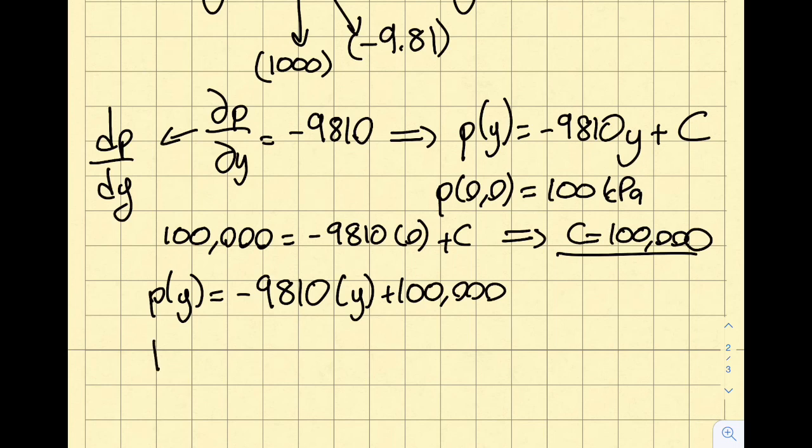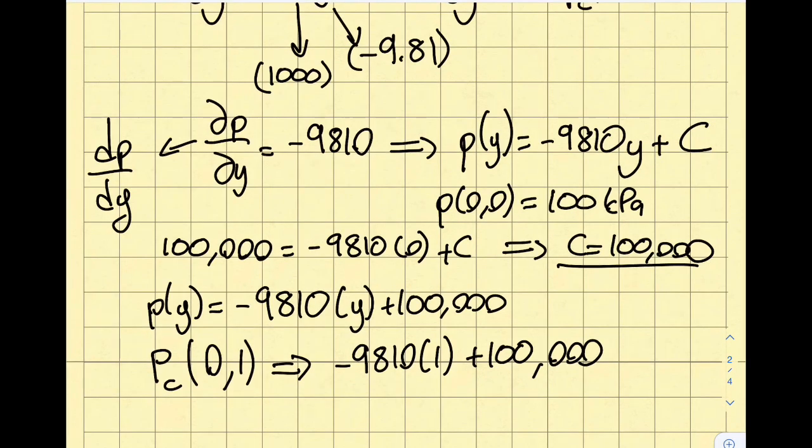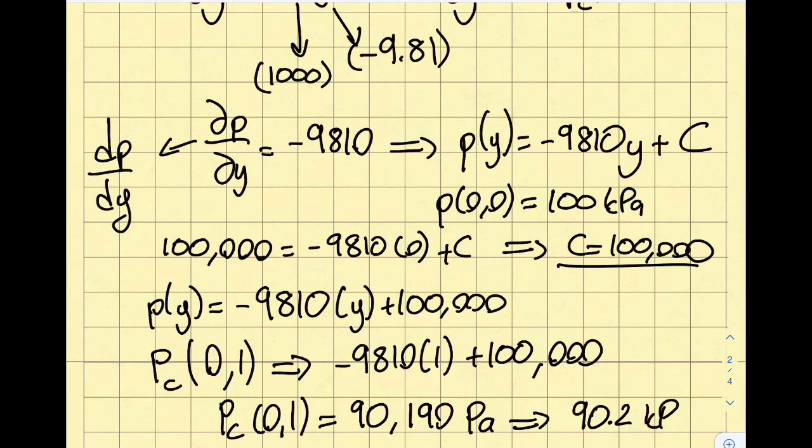So then my p of y turns out to be minus 9810 times y plus 100,000. So in the question, it's asking me pc, which is, in fact, at 0,1. So over here, what I will do is I will plug minus 9810 times 1 plus 100,000. From here, I obtained pc at 0,1 as 90,190 pascals. And if I convert this, you can see that I get approximately 90.2 kilopascals as my pc value.